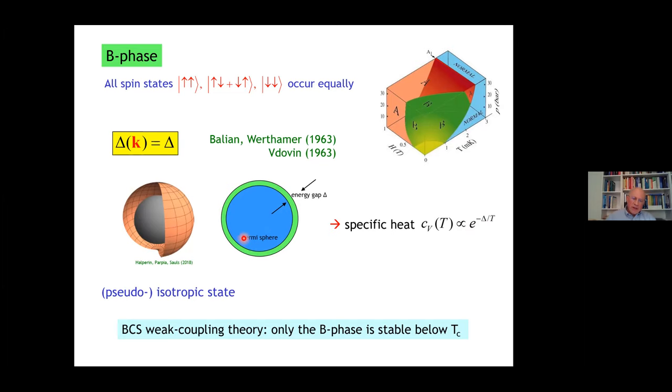Interestingly, in weak coupling theory, only the B phase is stable below T_C. There is no other phase.